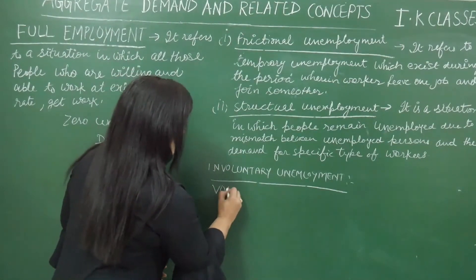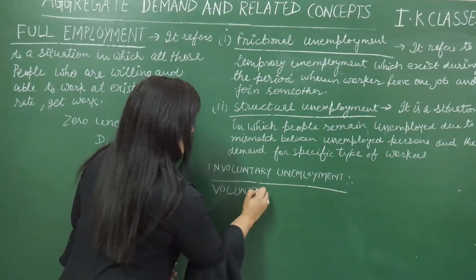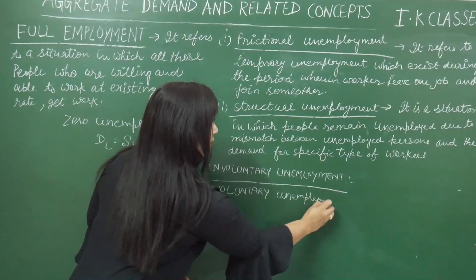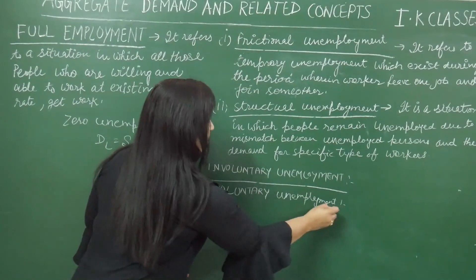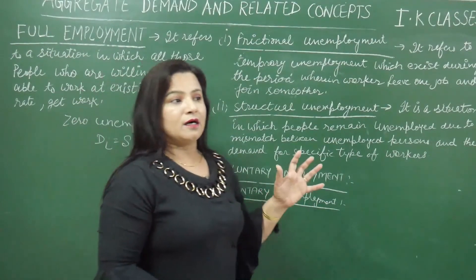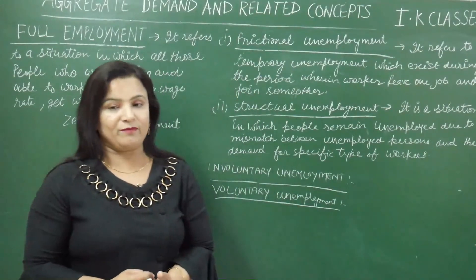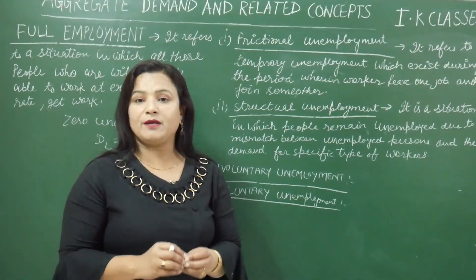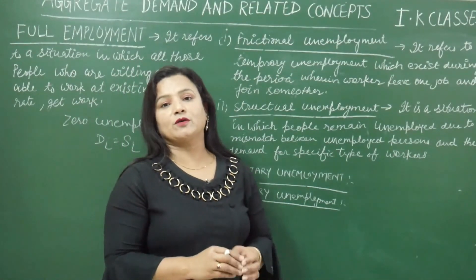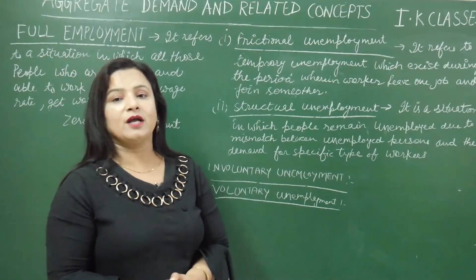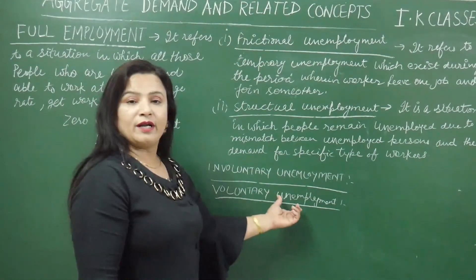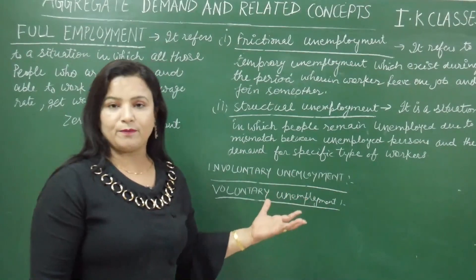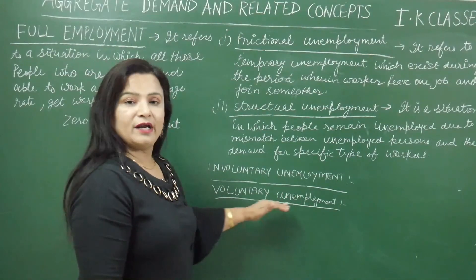Voluntary unemployment is when people who are able to work and want to work, but at the existing wage rate they choose not to do their job — they are unemployed by their own choice. When we talk about national unemployment, we do not count voluntary unemployment.